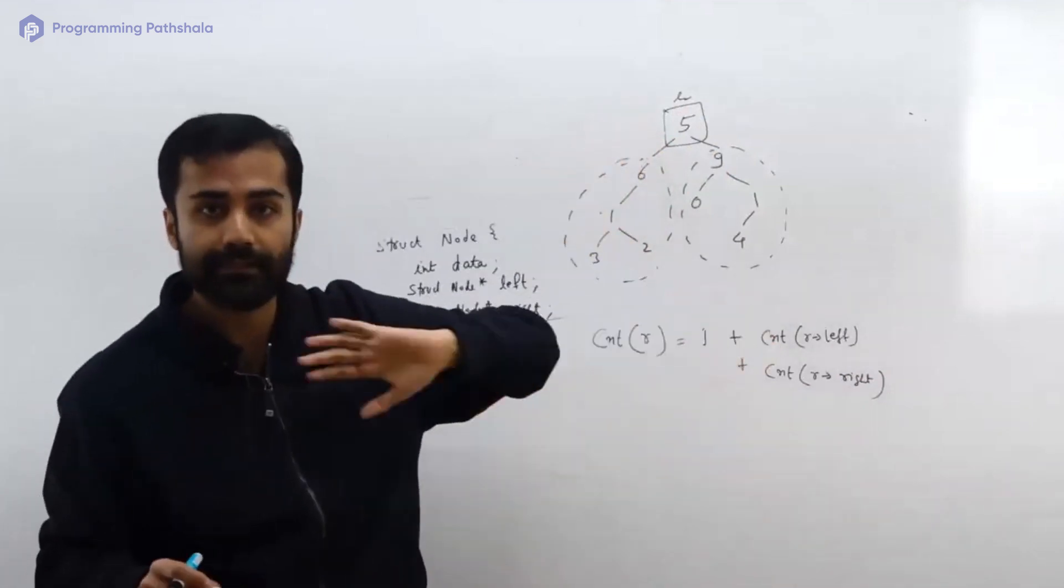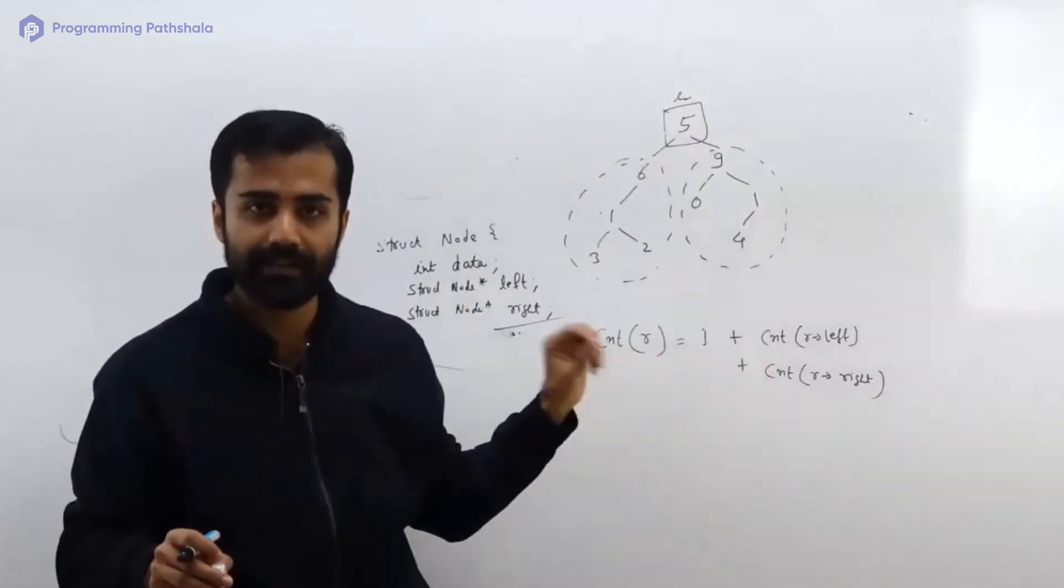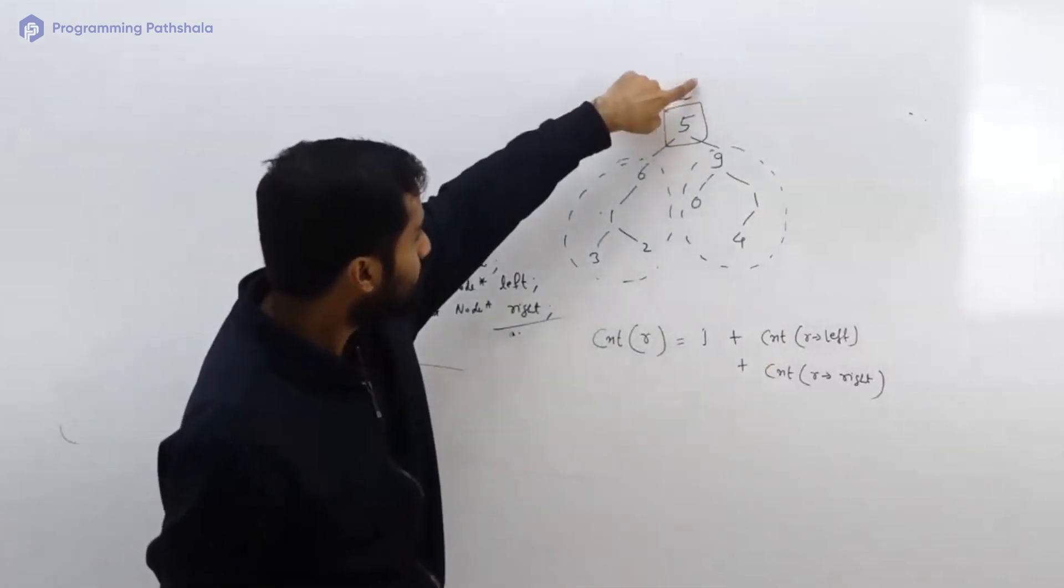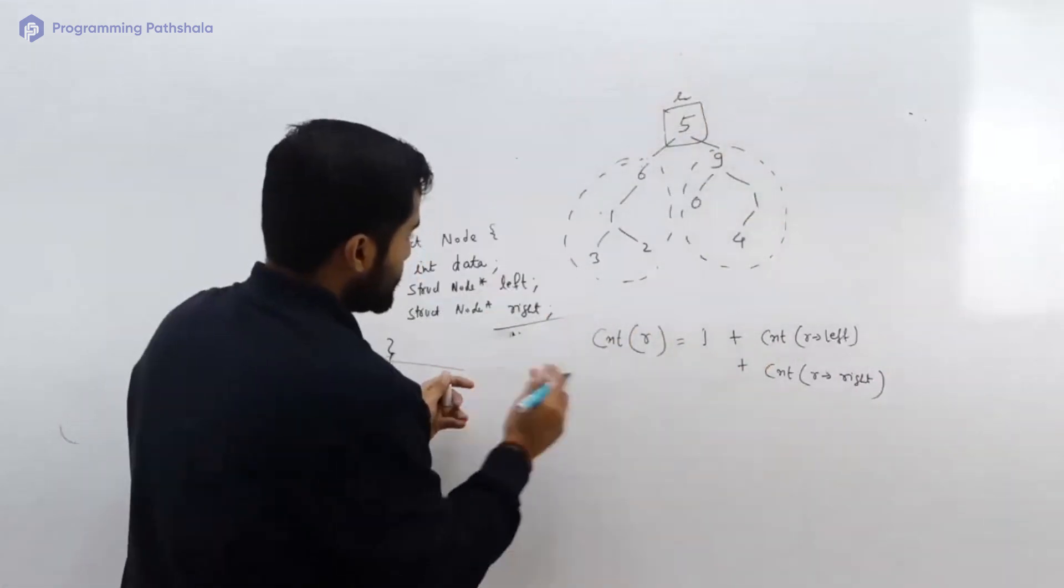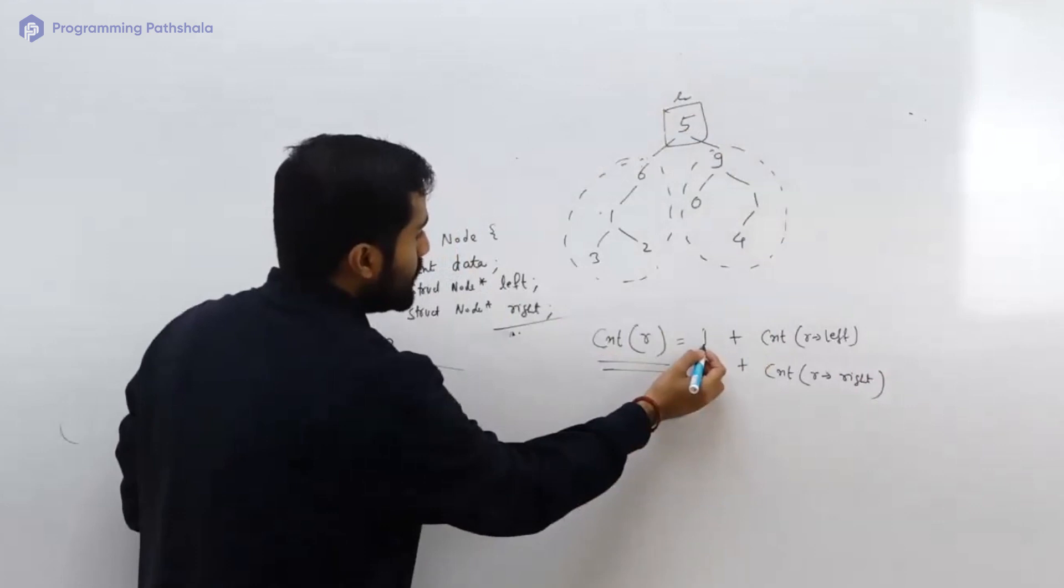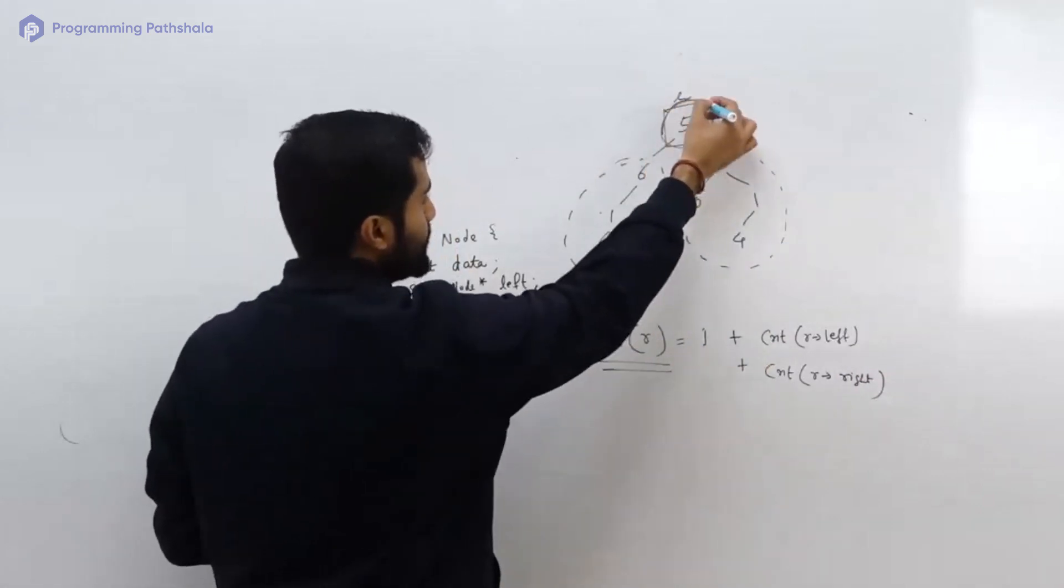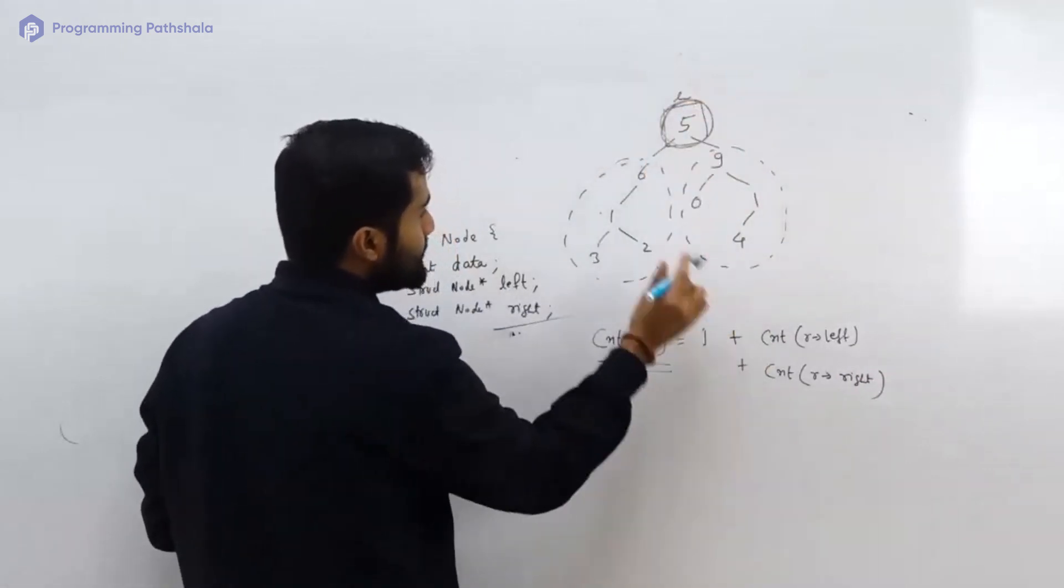So I can say number of nodes present in this is equals to 1 - why 1? That one is for the contribution of this one - plus the number of nodes present in that plus the number of nodes present in that.